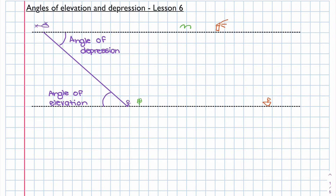Let's have a look at the next scenario. We have a little tree and a diagonal connection to a bird in the sky. This angle here will be my angle of depression and this angle here will be my angle of elevation. It's important to understand the wording: the angle of elevation is from the tree to the bird, and the angle of depression is from the bird to the tree.